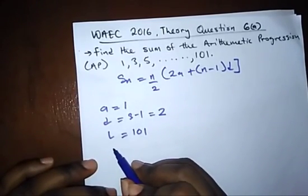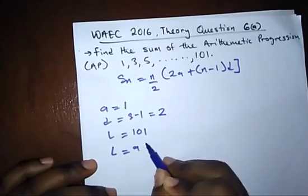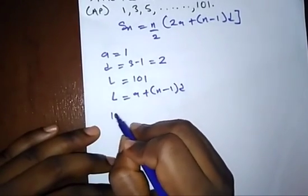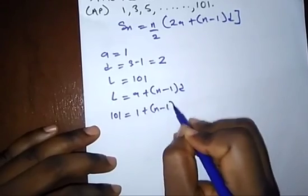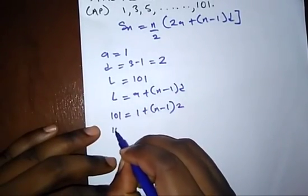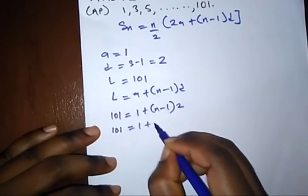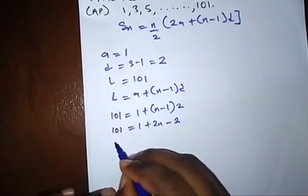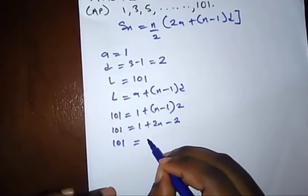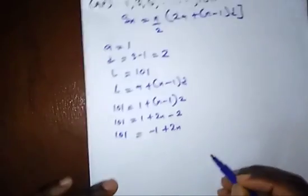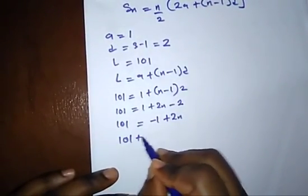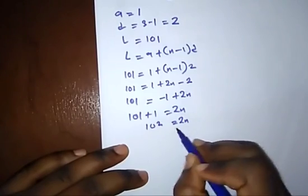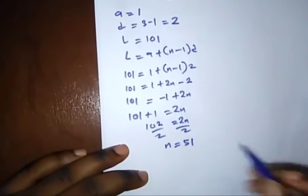We first find n using l = a + (n-1)d. So 101 = 1 + (n-1) × 2, which gives 101 = 1 + 2n - 2, so 101 = 2n - 1. Rearranging: 101 + 1 = 2n, so 102 = 2n. Dividing both sides by 2, n = 51.